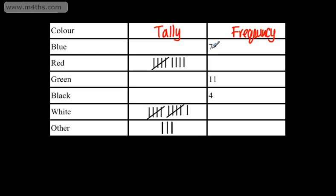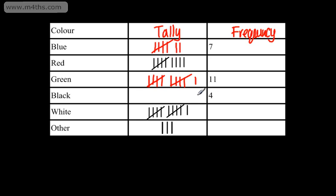Here I have a frequency of seven, so what I need to do in the tally column is draw five and then two more: one, two, three, four, five, and then one, two. Here I've got eleven, so we'll do the first five, then another five, and then one more. Here I've got four, so this would simply be one, two, three, four.